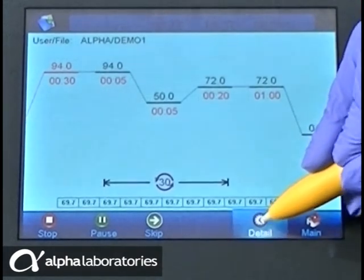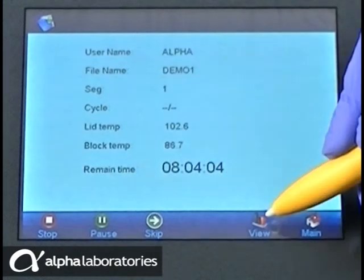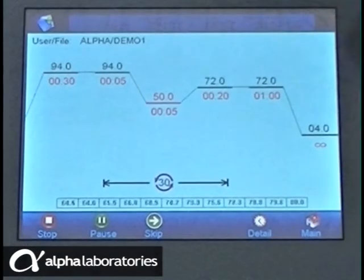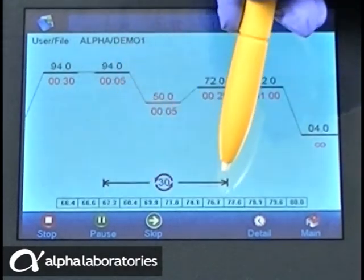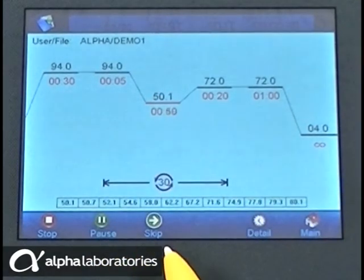At the top of the screen, you can see what the current segment phase is, current cycle and current block and lid temperatures. With a gradient applied, the grid at the bottom of the screen shows the temperature range across the wells during the gradient segment. You can pause or skip steps at any time.